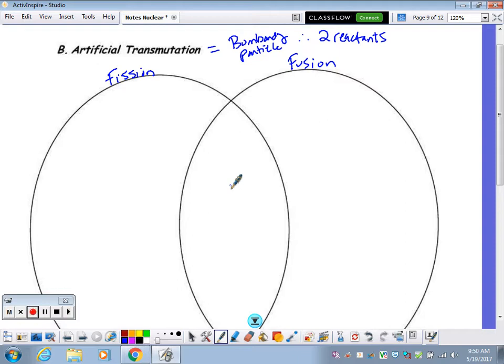Number one, they're artificial because they are a forced process. Number two, most importantly, fission and fusion tie into the idea of Einstein's most famous equation, E equals MC squared.